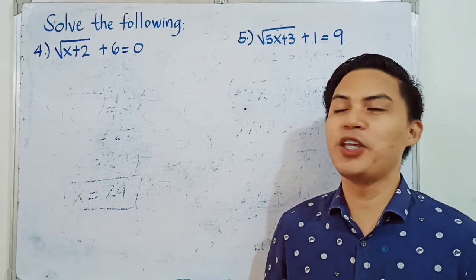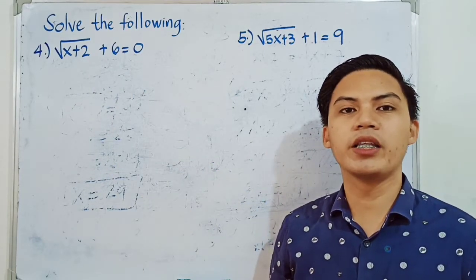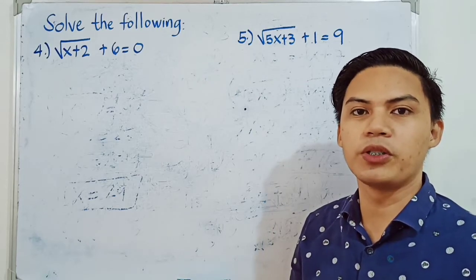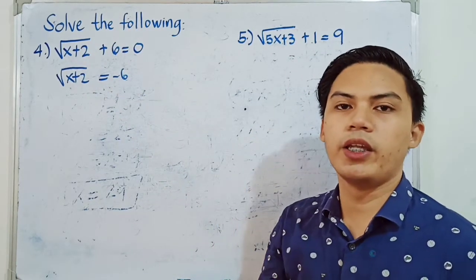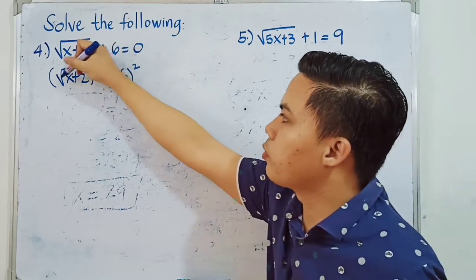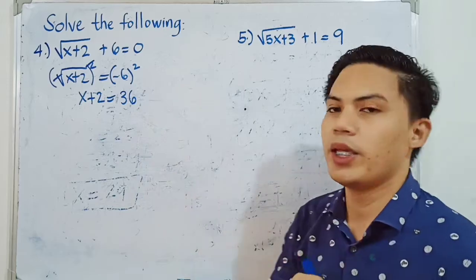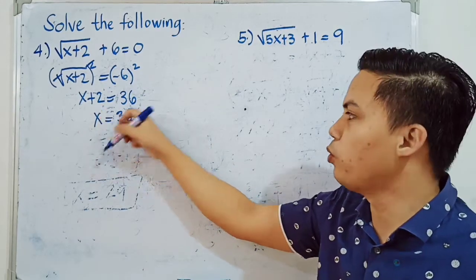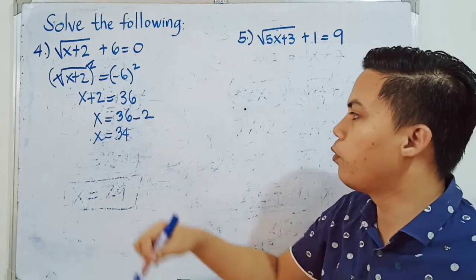For our last example, we have the square root of X plus 2 plus 6 is equal to 0. We need to isolate the radical, so we transpose positive 6 to the right side. This gives us the square root of X plus 2 is equal to negative 6. We then square both sides — the radical cancels — leaving X plus 2 is equal to negative 6 squared, which is 36. Transposing positive 2 gives X is equal to 34.